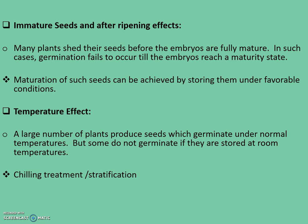Many plants shed their seeds before the embryos are fully mature. In such cases, germination fails to occur until the embryos reach a maturity state. Some seeds may require a period of after-ripening — meaning dry storage at room temperature — before they can germinate. The duration of the after-ripening requirement may be as short as a few weeks or as long as many years. In the field, after-ripening may occur in winter annuals where dormancy is broken by high summer temperatures, allowing seeds to germinate in fall. Moist chilling during cold winter months is effective for summer annuals. After-ripening of horticultural and agricultural crop seeds is usually performed in special drying ovens that maintain appropriate temperature, aeration, and low moisture conditions.